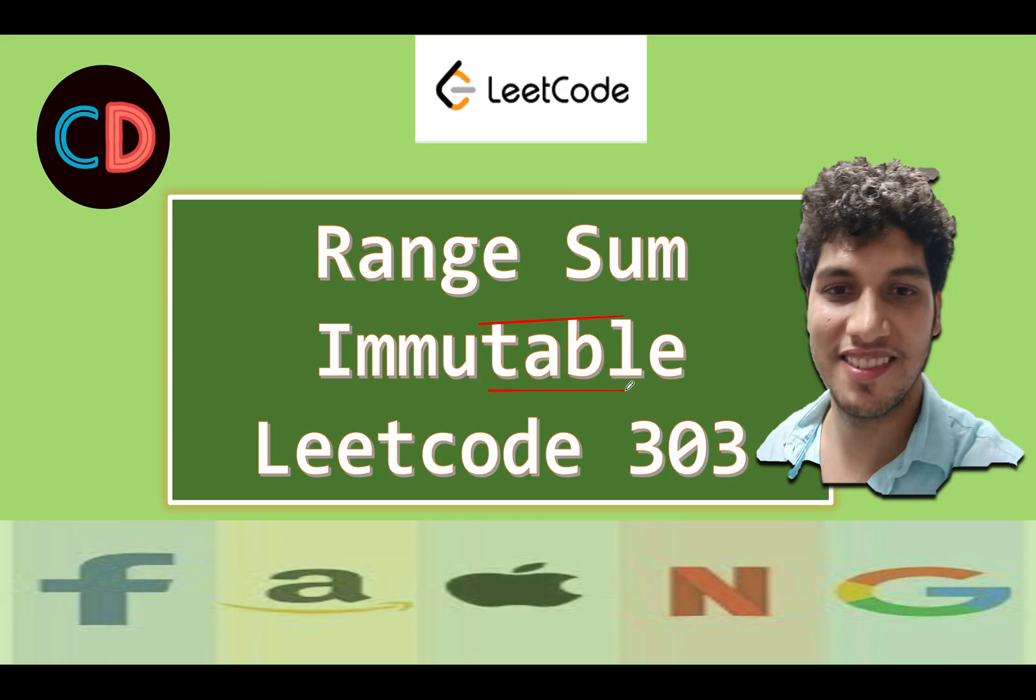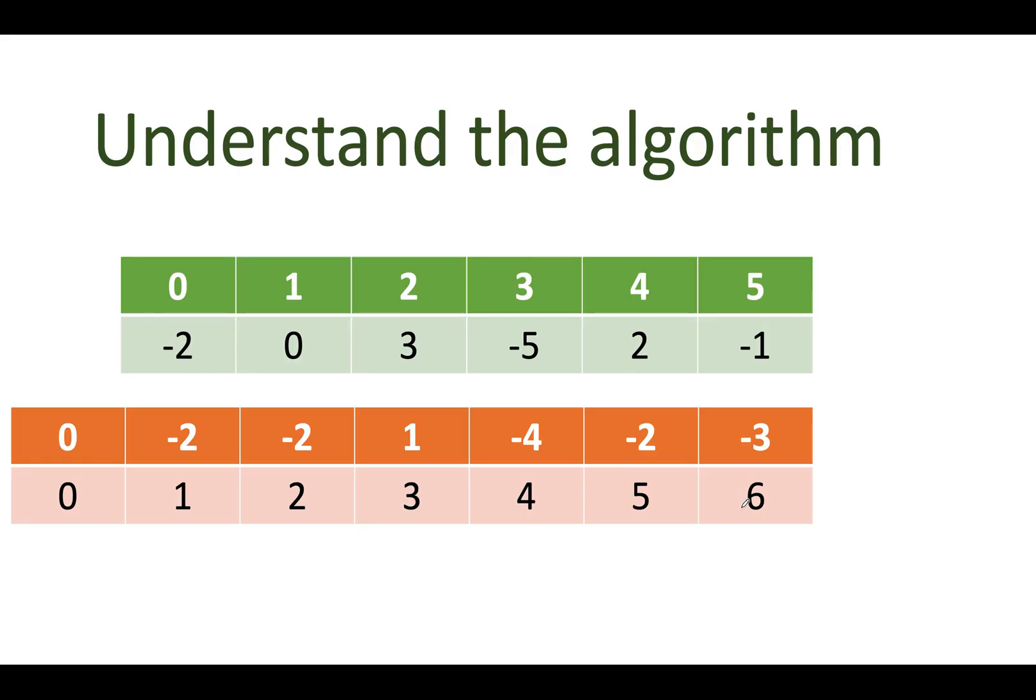Range Sum Query Immutable, LeetCode 303. It's an easy question and if you know the prefix sum approach, you will be able to solve it by yourself. Let's try and understand the question by the same example that was given. This is the input array of length 6. The first element is minus 2, 0, 3, minus 5, 2, and minus 1.